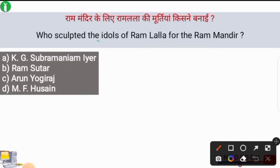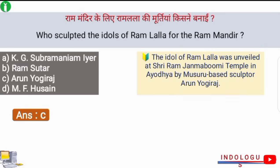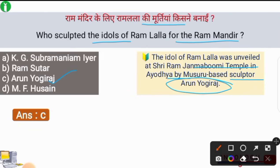The first question is: who sculpted the idols of Ram Lalla for the Ram Mandir? The correct answer is option number C. The idol of Ram Lalla was unveiled at Shri Ram Janmabhumi Temple in Ayodhya by Mysuru-based sculptor Arun Yogi Rajani, who sculpted this. You have to keep your attention on this.